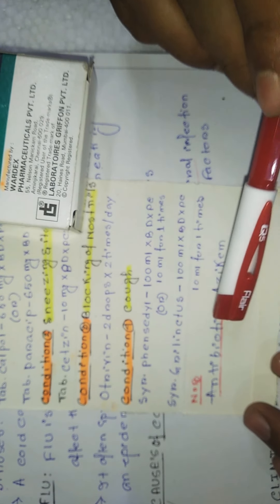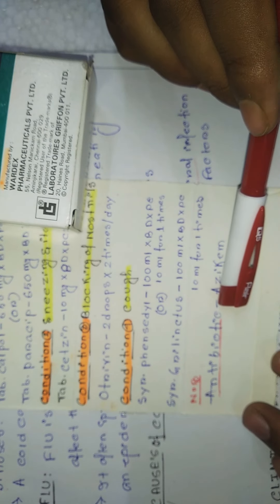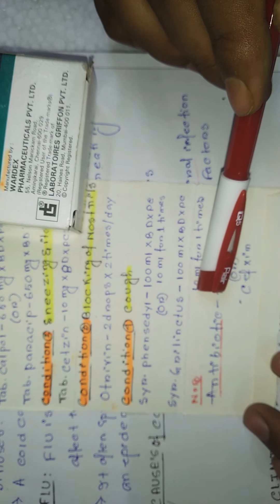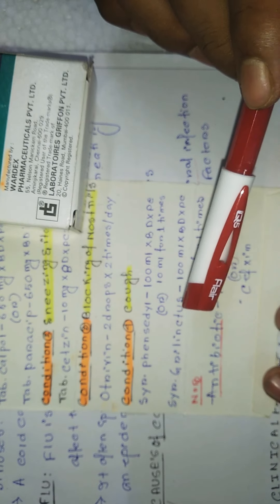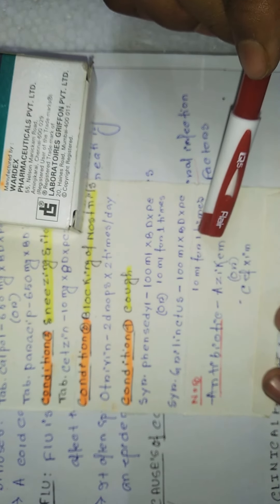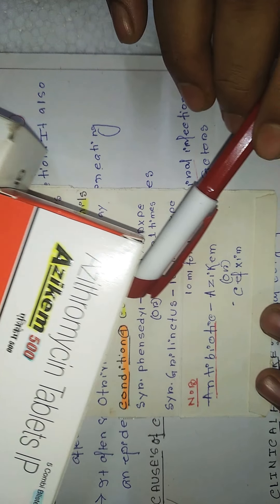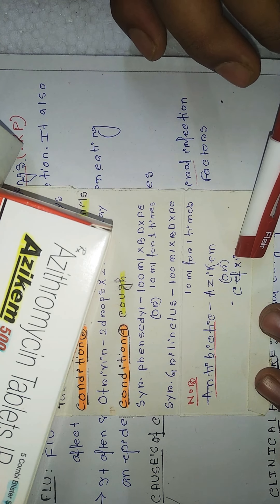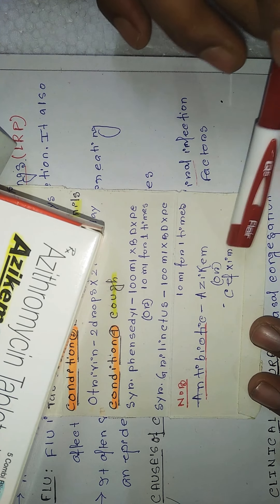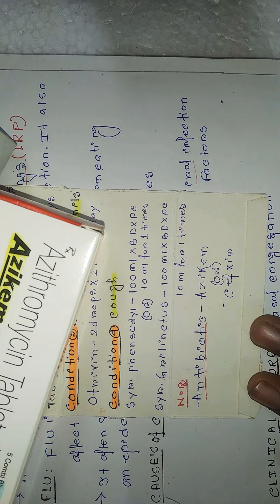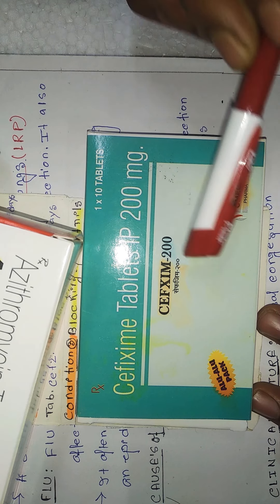If you see there is laryngitis or pharyngitis — laryngitis means inflammation in the larynx, pharyngitis means inflammation in the pharynx — that time you may prescribe an antibiotic also, that is Azicam, which is nothing but Azithromycin. You can also give Cefixime, which is a cephalosporin antibiotic, 200 mg, for patients with larynx and pharyngitis infection.